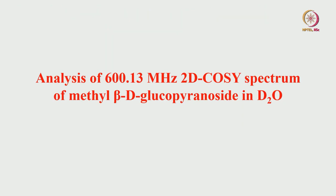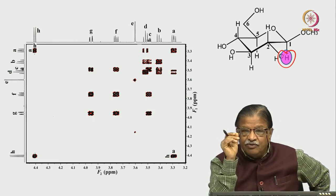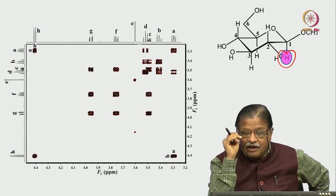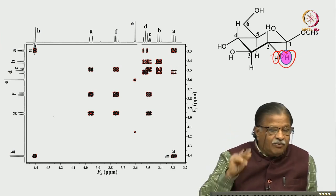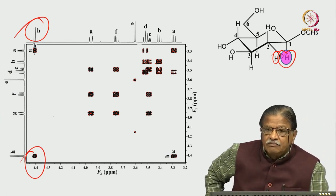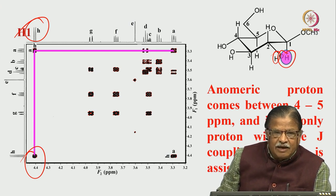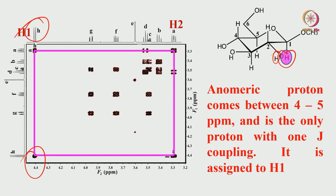Now I will take the assignment of a sugar-like molecule — a glucoside. Always, if you want to analyze sugar molecules, remember: the anomeric proton comes downfield, always between 4 to 5 or 6 ppm. So you should look at the anomeric proton — it is the only proton which couples with one other proton and gives a doublet. In this molecule, there is a doublet coming in the region of around 4.4 ppm. Safely, I would say that is the anomeric proton, H1. Using the anomeric proton, I complete this square — that must be proton H2. H1 is coupled to H2. Please remember: in the case of sugars and other molecules, always start with the anomeric proton. That makes your job simpler to analyze.